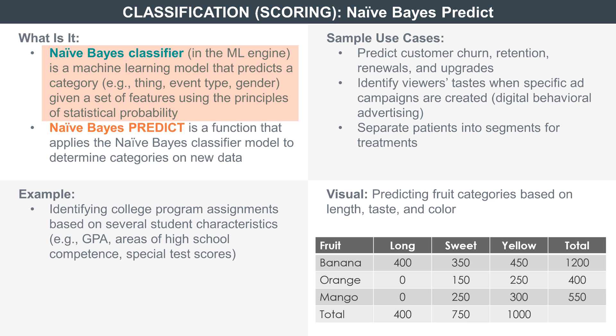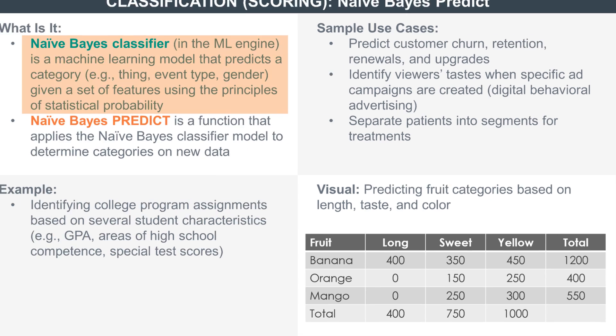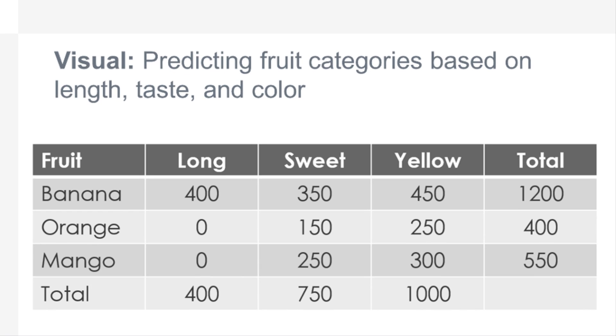As humans, we know that when these four data points are given to us, we connect them and say banana. But a Naive Bayes classifier assumes that these are not related features and proceeds to treat them as independent events.